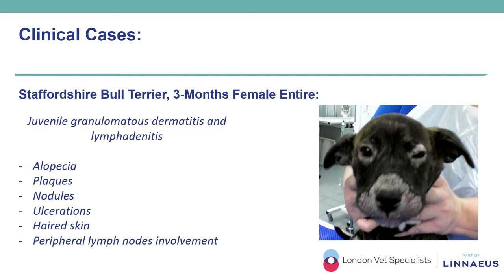This three-month-old female Staffordshire Bull Terrier was presented with a progressive history over a few days of alopecia, plaques, nodules and ulcerations involving the dorsal muzzle, the chin, and in a symmetrical fashion the periocular areas and ear pinna, with enlargement of the peripheral lymph nodes. The age at onset and clinical features were highly suggestive of juvenile granulomatous dermatitis and lymphadenitis, also called juvenile cellulitis. This is believed to be an immunomediated condition, and although the etiology has never been completely elucidated, several triggers have been described including infections, drugs and vaccinations. It typically involves young dogs but can also be seen in adults.